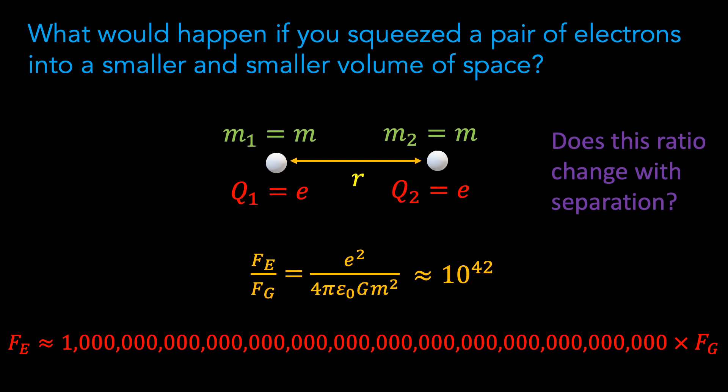This jittery motion in turn increases the energy of the two electrons, and at some stage this quantum mechanical energy becomes comparable to the mass energy required to create a new electron. Einstein showed that energy can be converted into mass, and vice versa, and the energy required to do this can be calculated using Einstein's famous equation E equals mc squared. We can actually figure out the distance at which this happens by combining Einstein's famous equation with Heisenberg's uncertainty principle.